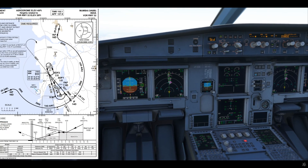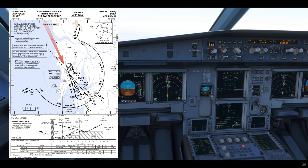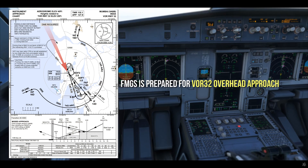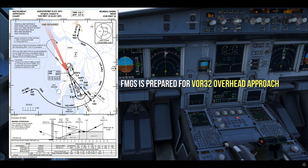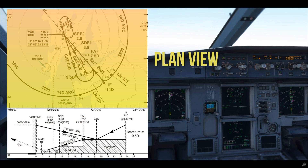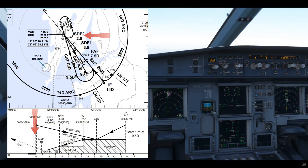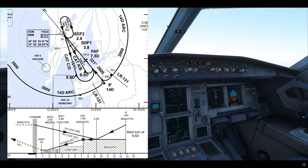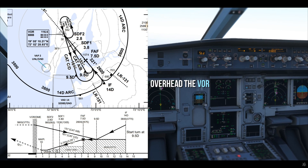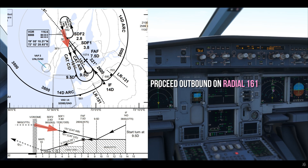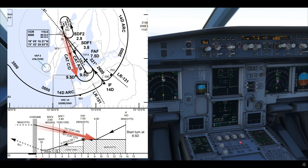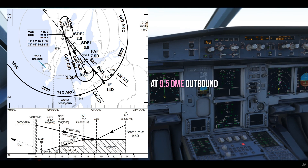Let's take a look at the chart. Right now I'm approaching Mumbai from the north. I've set the course to the VOR, and the FMGS has already been prepared for VOR runway 32 overhead approach. We'll be descending down to 3,800 feet, because as per the chart profile view, overhead the VOR you should be at 3,800 feet. It's good practice to be at flaps 1 and S-speed when you reach the VOR, and then you proceed outbound on radial 161, descending to 2,600 feet. You need to set the lower altitude or else the airplane won't descend.